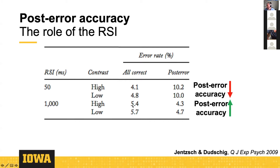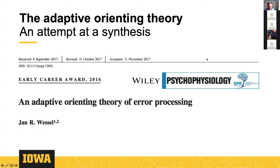This led Jentzsch and Dudschig to propose their maladaptive bottleneck theory of error processing, which proposes that error processing is effortful and therefore binds resources, taking them away from task performance on future trials, thereby causing you to get worse. What I want to introduce now is my own take — a theory of error processing that I wrote around 2017.